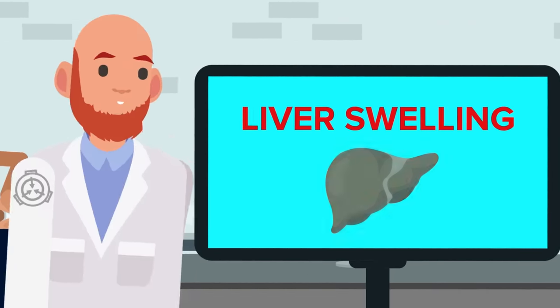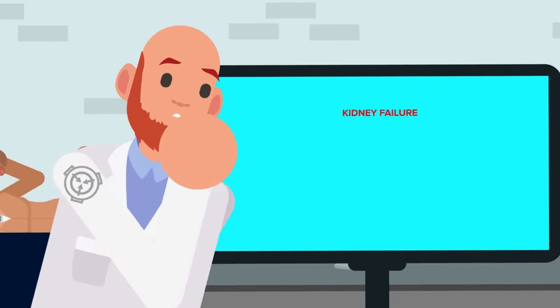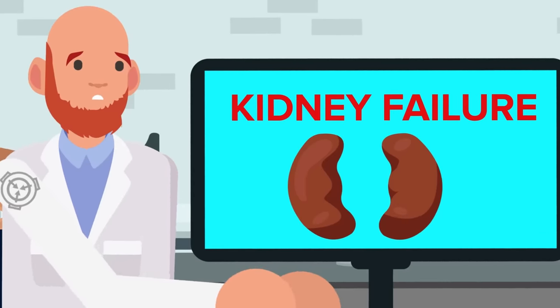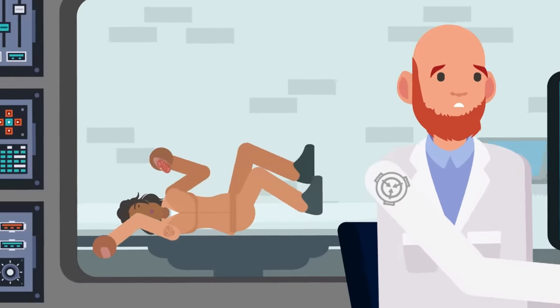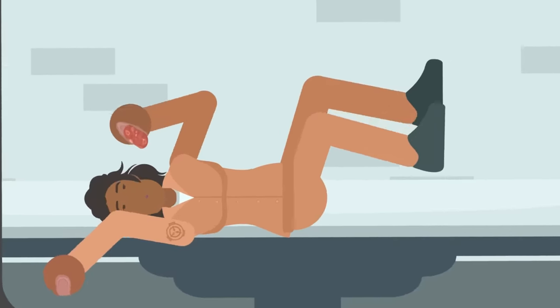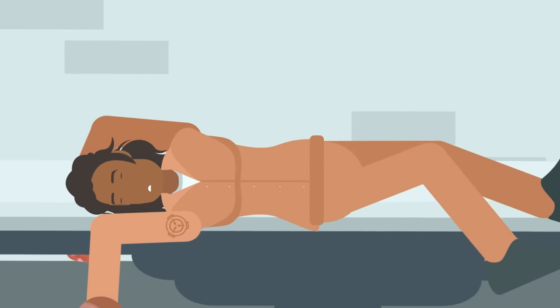During stage two, his liver began to swell, and he began to enter the early phases of kidney failure. By the time stage four was complete and the stone could be removed, the subject had passed out from the pain.